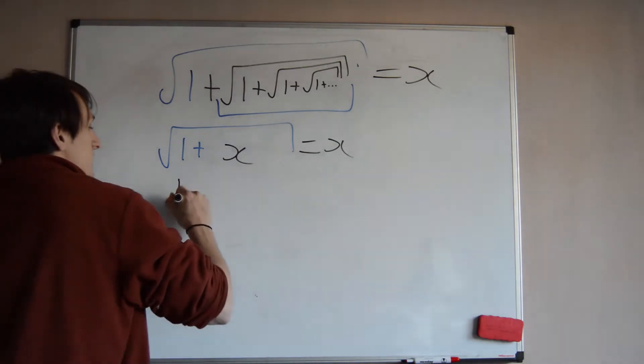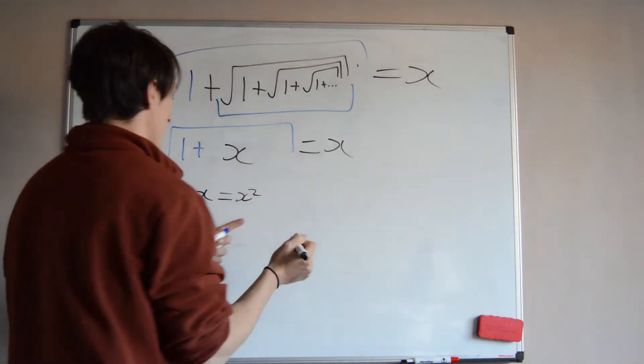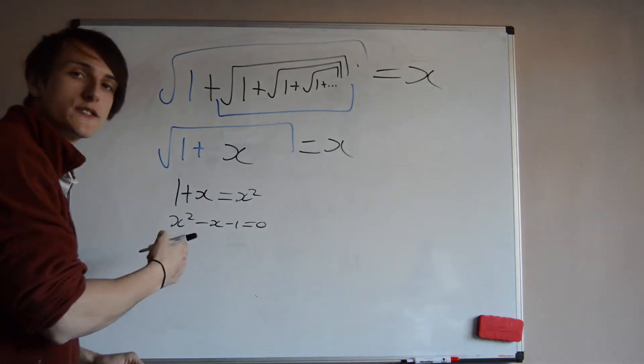We can square both sides. We get 1 plus x is equal to x squared, then just minus things from both sides. And how do we solve this quadratic?